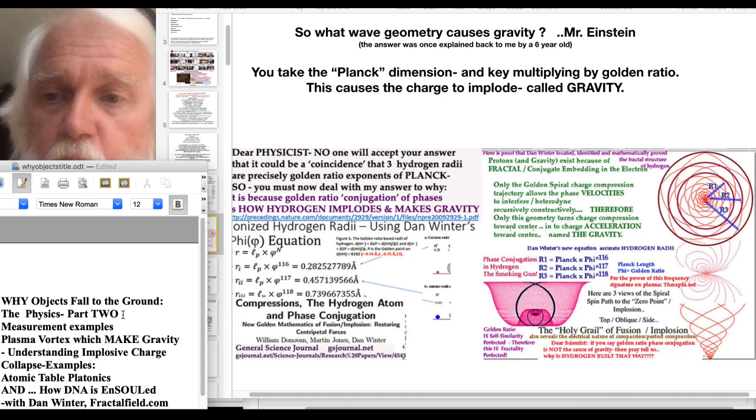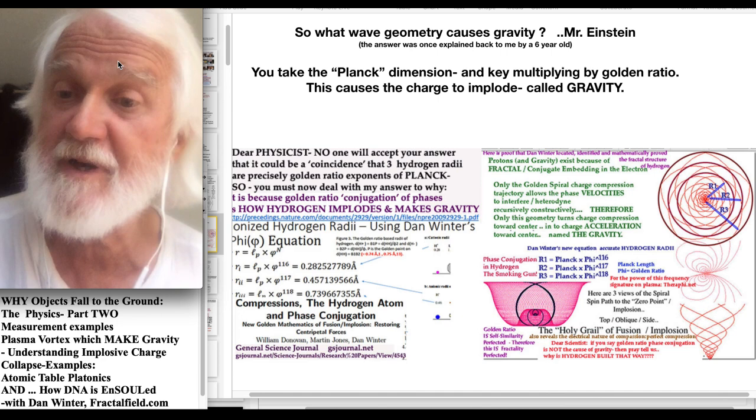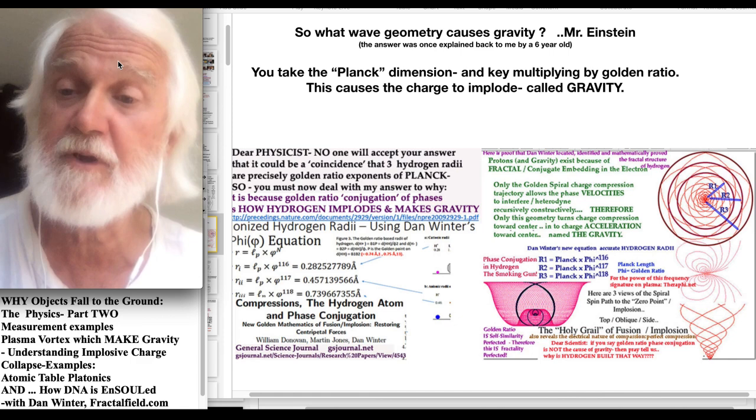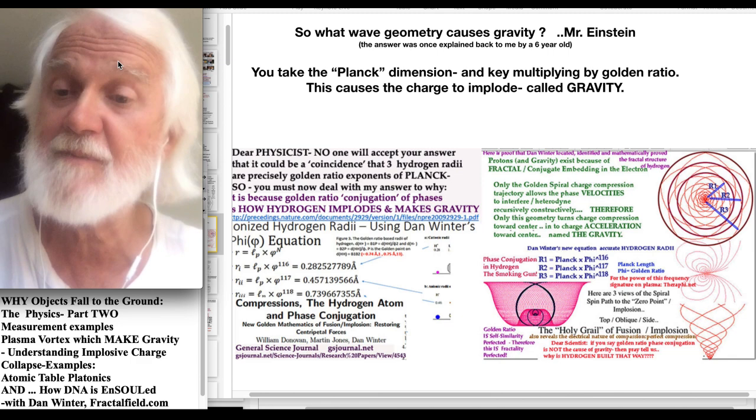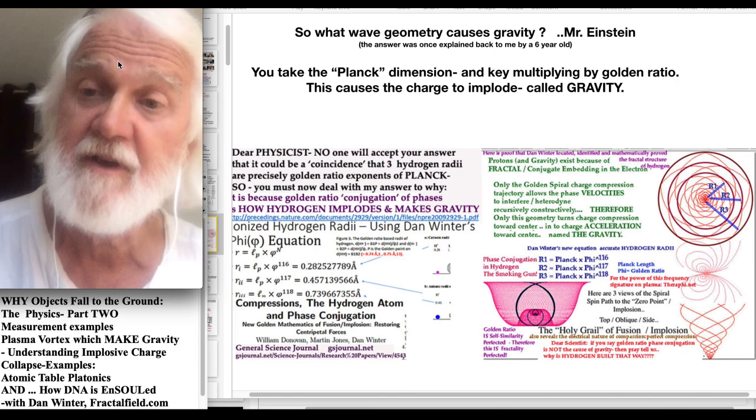This is entitled Why Objects Fall to the Ground the Physics Part 2 with measurement examples of how plasma vortex make gravity, understanding how implosive charge collapse causes gravity, examples of implosive charge collapse in the atomic table, many graphics, and the same implosive charge collapse in the geometry of how DNA gets a soul by that same vortex implosion. So we wanted to do more graphics in this series Why Objects Fall to the Ground the Physics Part 2.